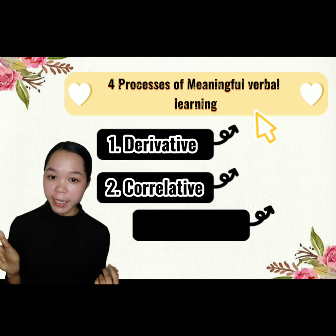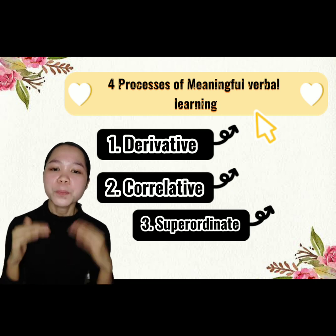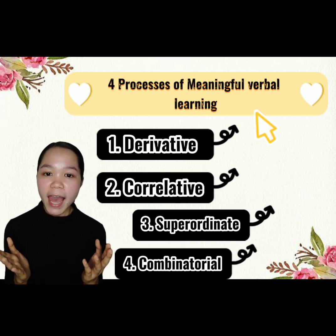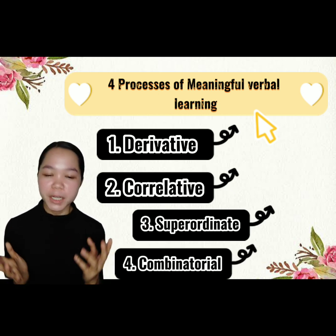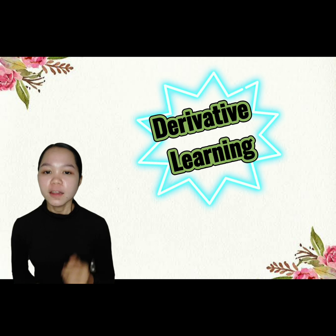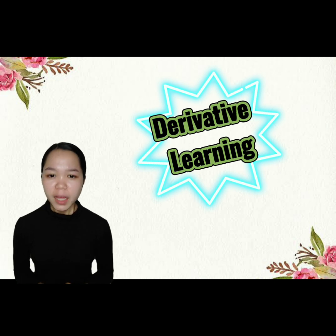correlative learning, superordinate learning, and combinatorial learning. Let us start with the first process of meaningful verbal learning, which is derivative learning.